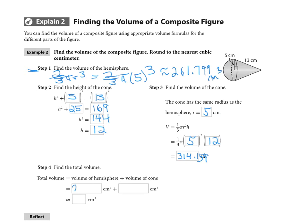So to find the total volume, we're going to add that number, volume of the hemisphere 261.799, plus the volume of the cone that we know is 314.159. Let's see what we can do to round that to the nearest cubic centimeter, as we were told in the problem. And that's going to be 576.